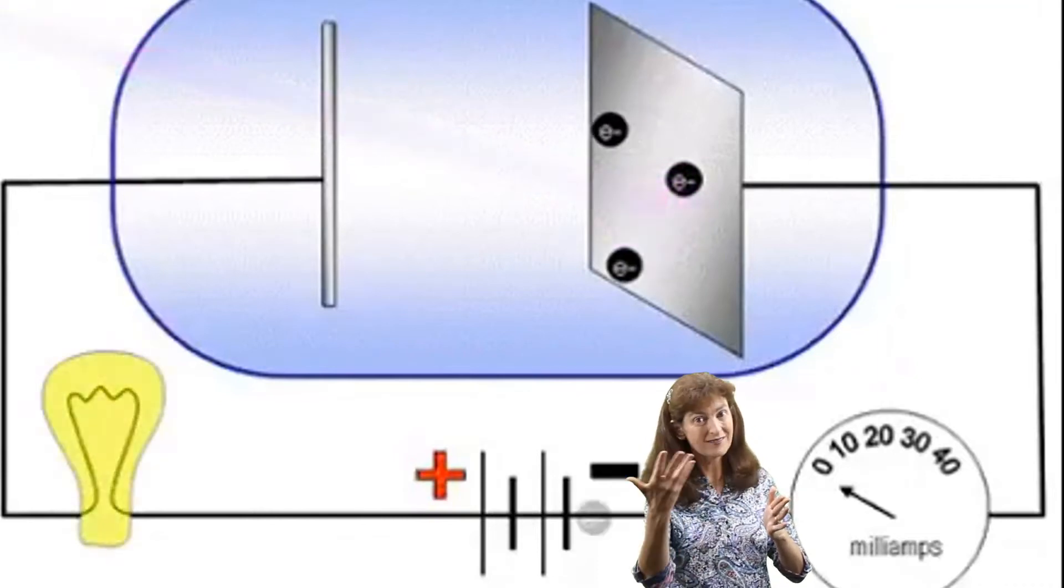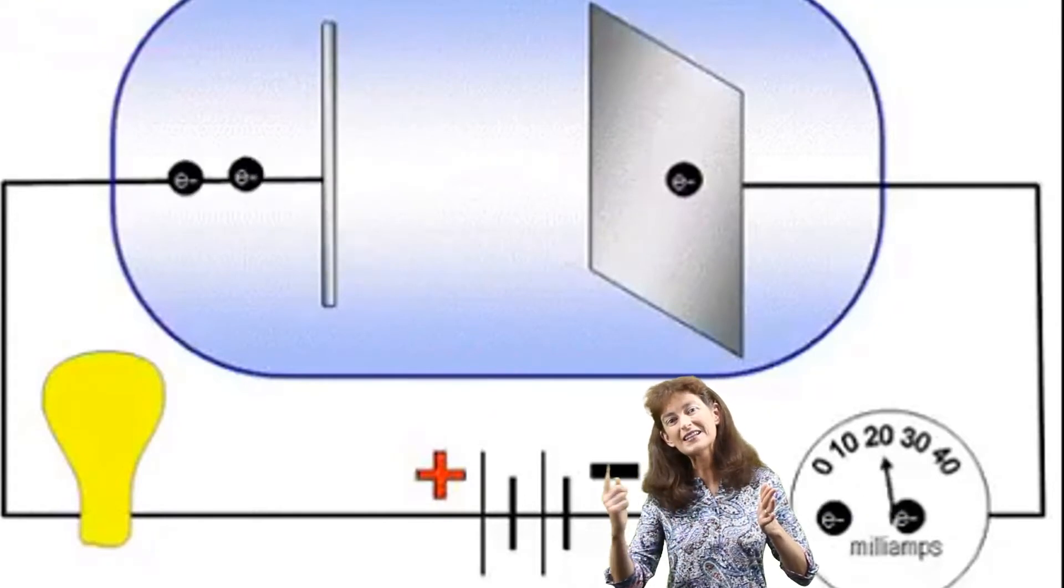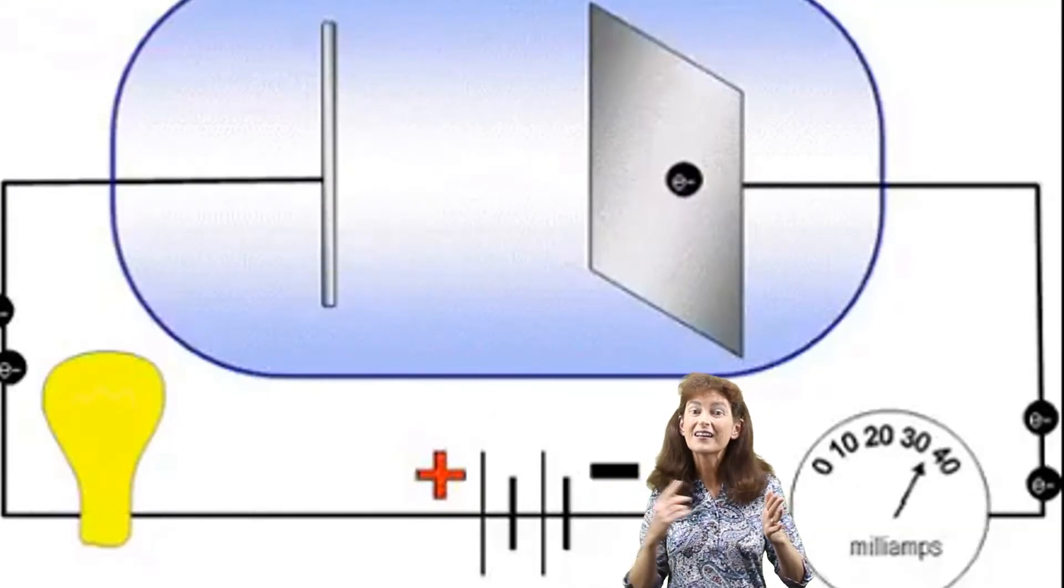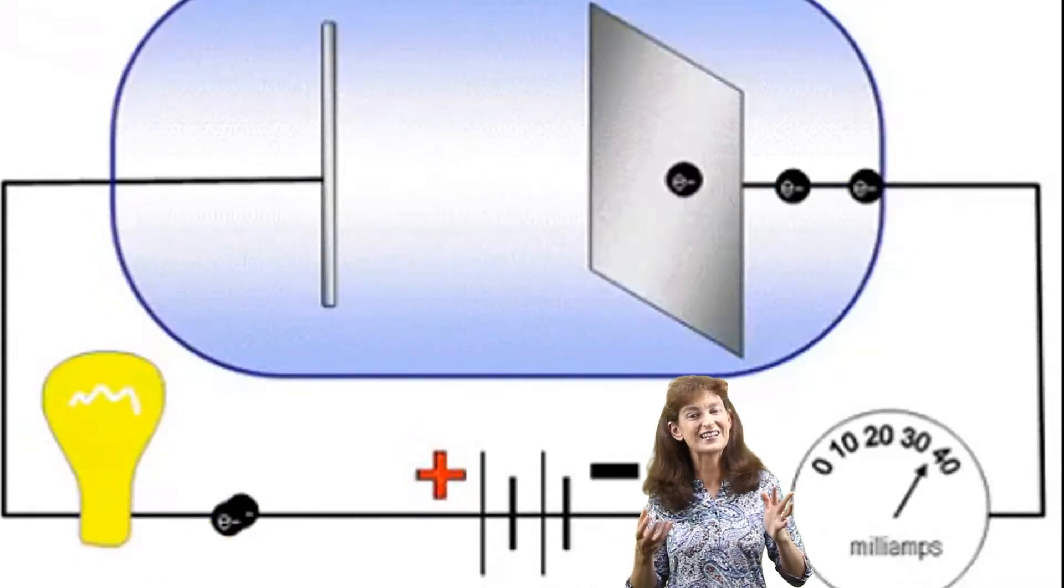And when they are then those electrons then complete the circuit so that we then can detect that by an ammeter or a voltmeter in the circuit.